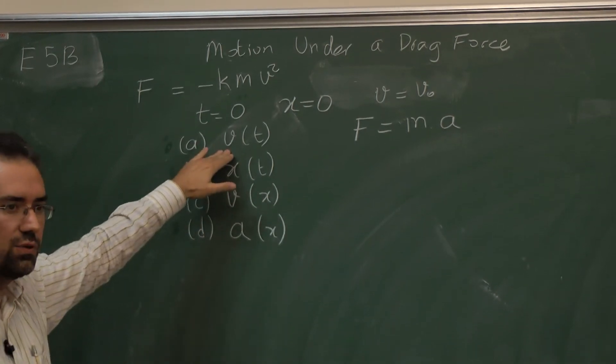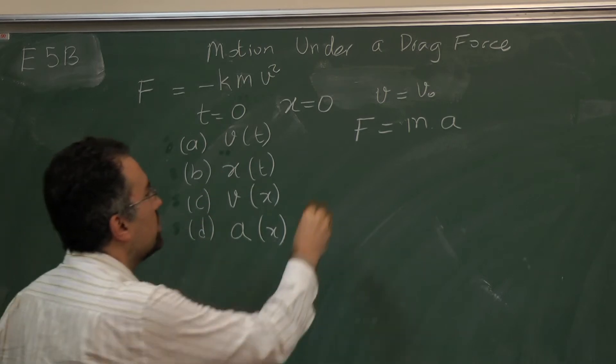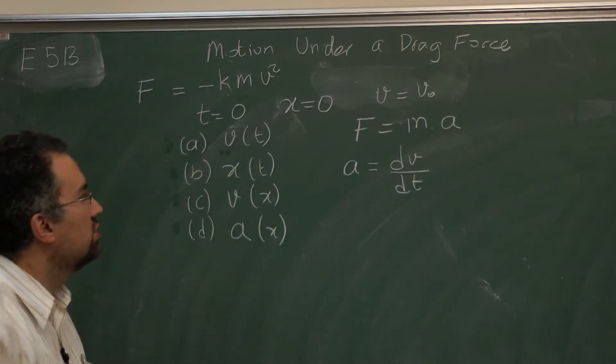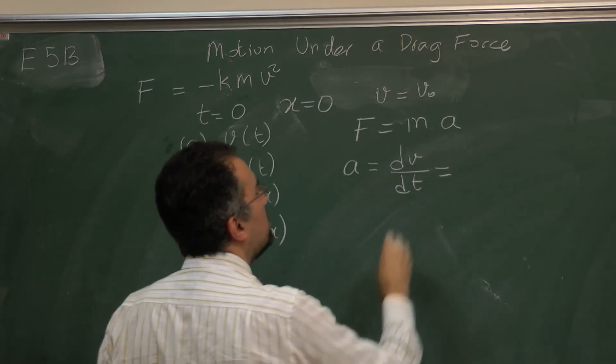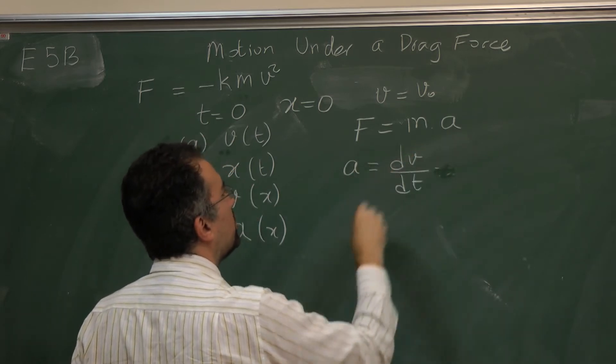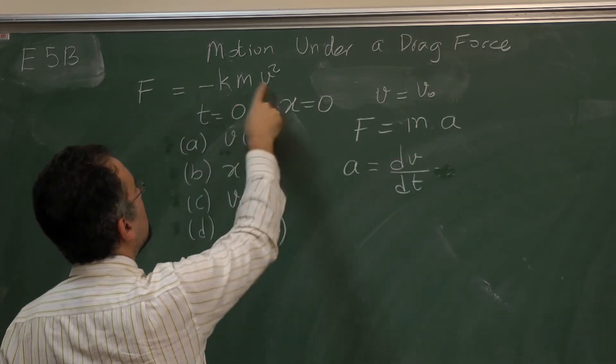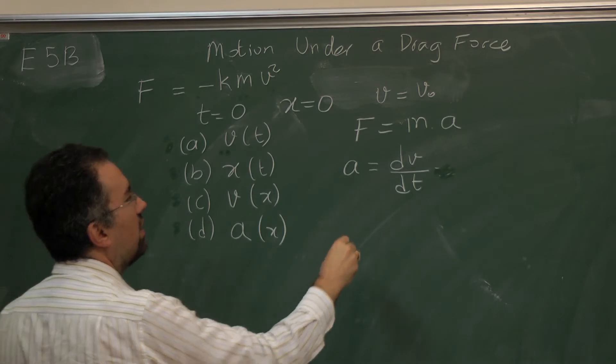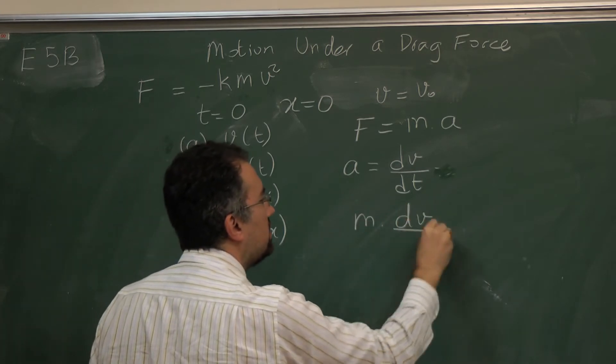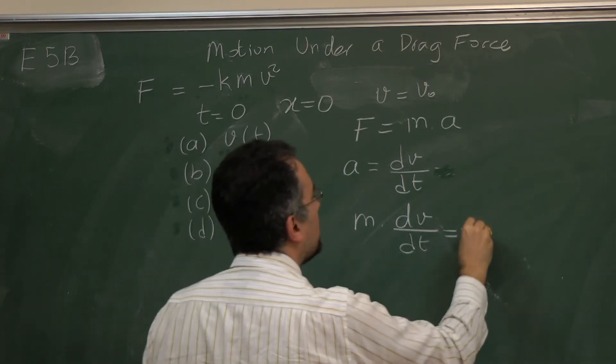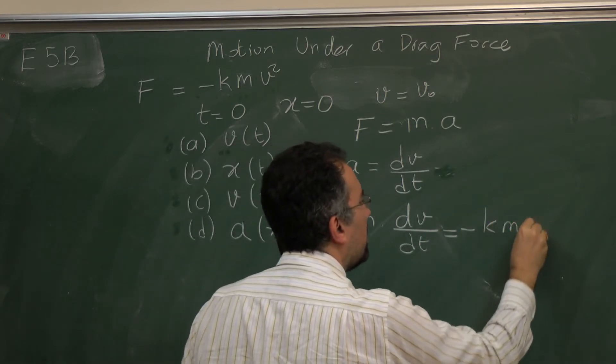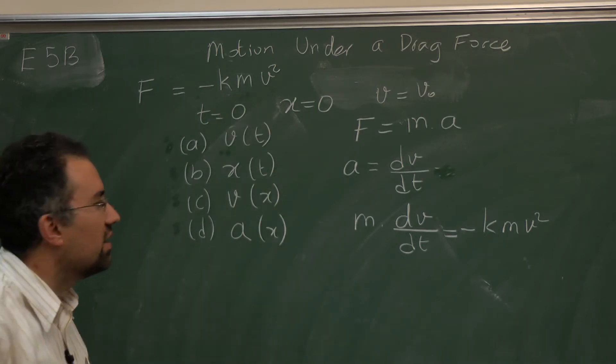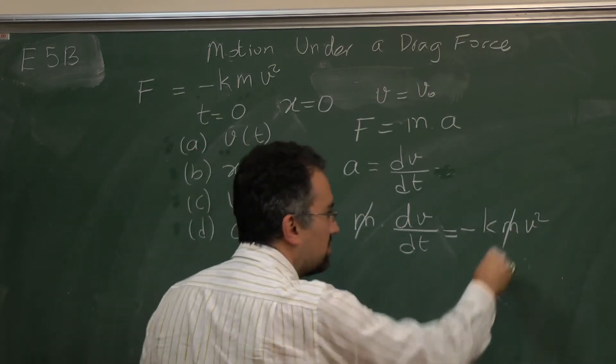So the first part asks for v of t. So essentially we know that a is just dv dt. So from this equation if I plug in, the force in this problem is given as minus k m v squared. So I have m times dv dt equals minus k m v squared.